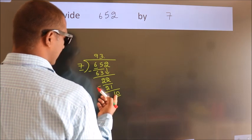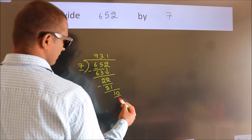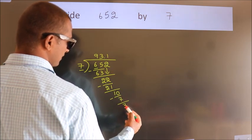A number close to 10 in the 7 table is 7 ones, 7. Now we subtract. We get 3.